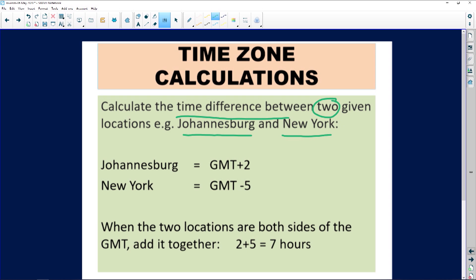This is how you would write it out. Calculate the time difference between two given locations, Johannesburg and New York. You say Johannesburg is GMT plus two because that's two zones from the GMT east, and New York is GMT minus five, which means five time zones west from the GMT.